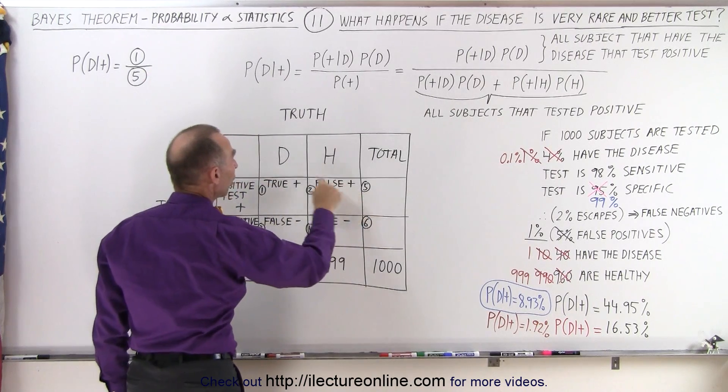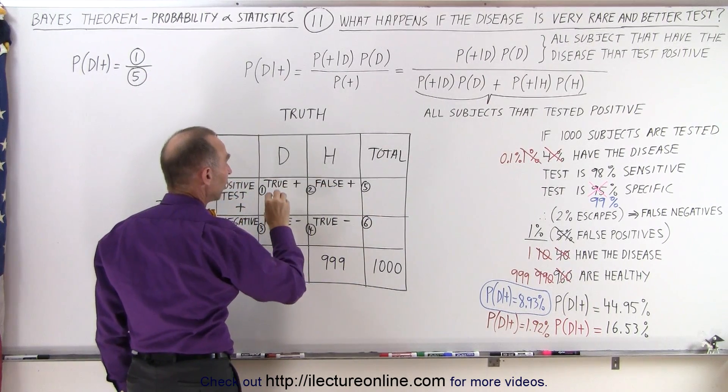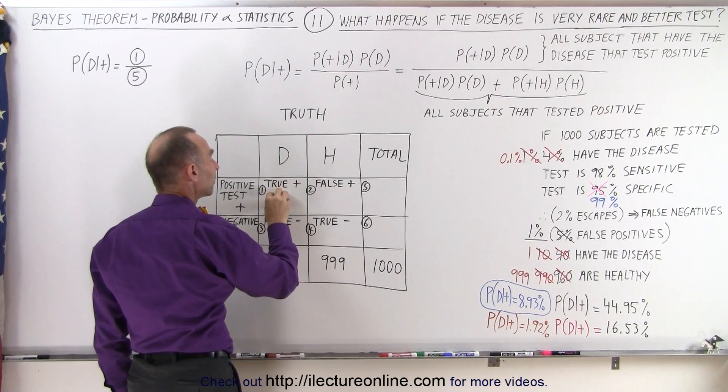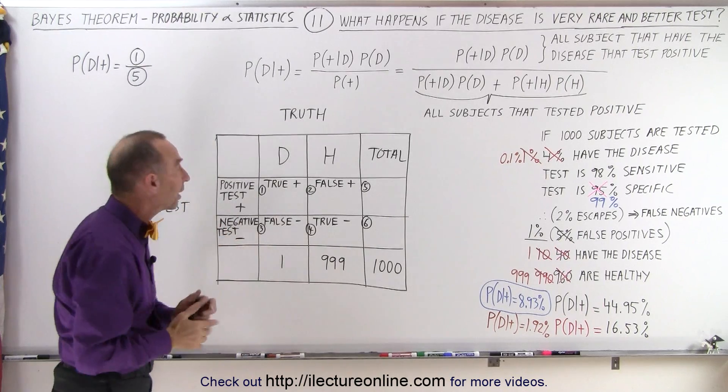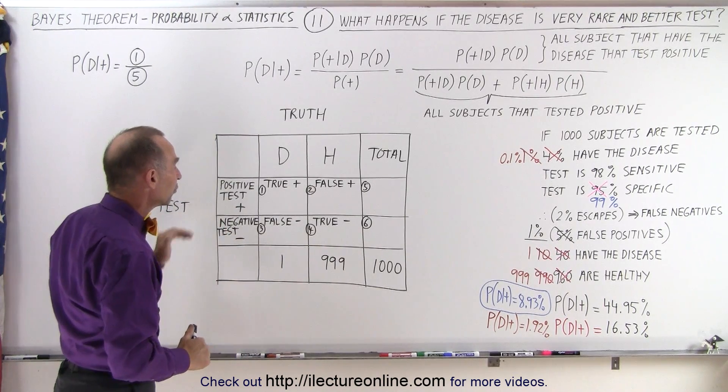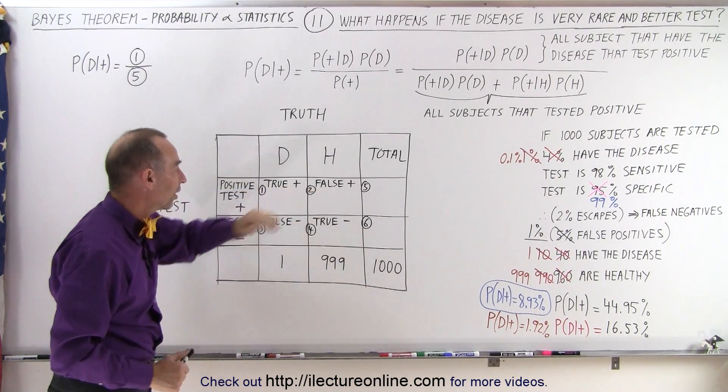number and we divide that by all the people that test positive, because some will test positive that actually do have the condition, but some will test positive that do not have the condition, that are healthy. We have to add those together. That becomes the denominator. So let's calculate what's in those cells right here.